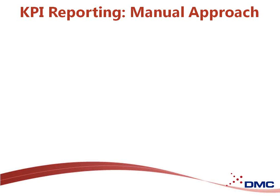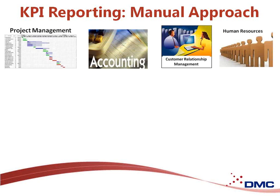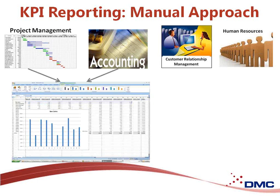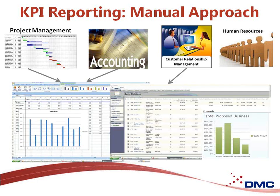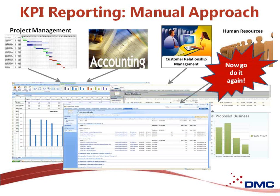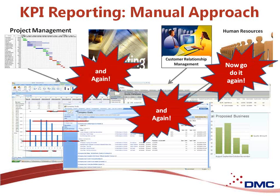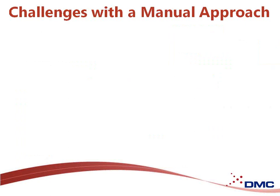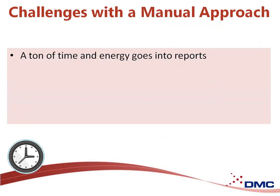For key performance indicator reporting, a manual approach is better than no approach at all. Usually, this will mean you have to generate reports from several different systems. In some cases, you might have to combine data, perhaps from a project management system or from your accounting system, and you'll typically use something like Excel to put that data together. You might also have sales information in a CRM system, individual goals to track training progress, and similar data. On a periodic basis, you collect all this information and put together reports — and then you do it again the next day or week, on and on. You can see quickly that a ton of time and energy will go into creating these reports if they're not automated.